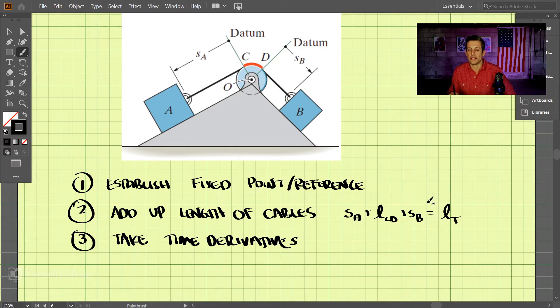Now what we need to do is take the derivatives with respect to time. So doing that, we have DSA over DT plus the derivative of this length CD with respect to time. So how is this length CD varying with time? Well, since the pulley size is not changing, the length from C to D stays constant no matter what the time is.